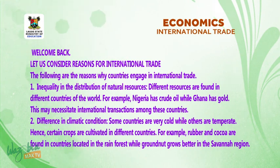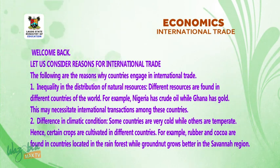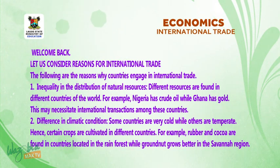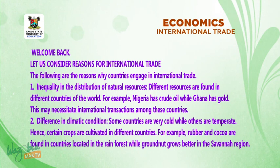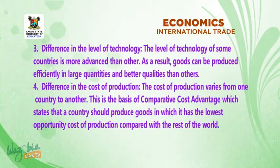2. Difference in climatic conditions. Some countries are very cold while others are temperate. Hence, certain crops are cultivated in different countries. For example, rubber and cocoa are found in countries located in the rainforest, while granite grows better in the savannah region.